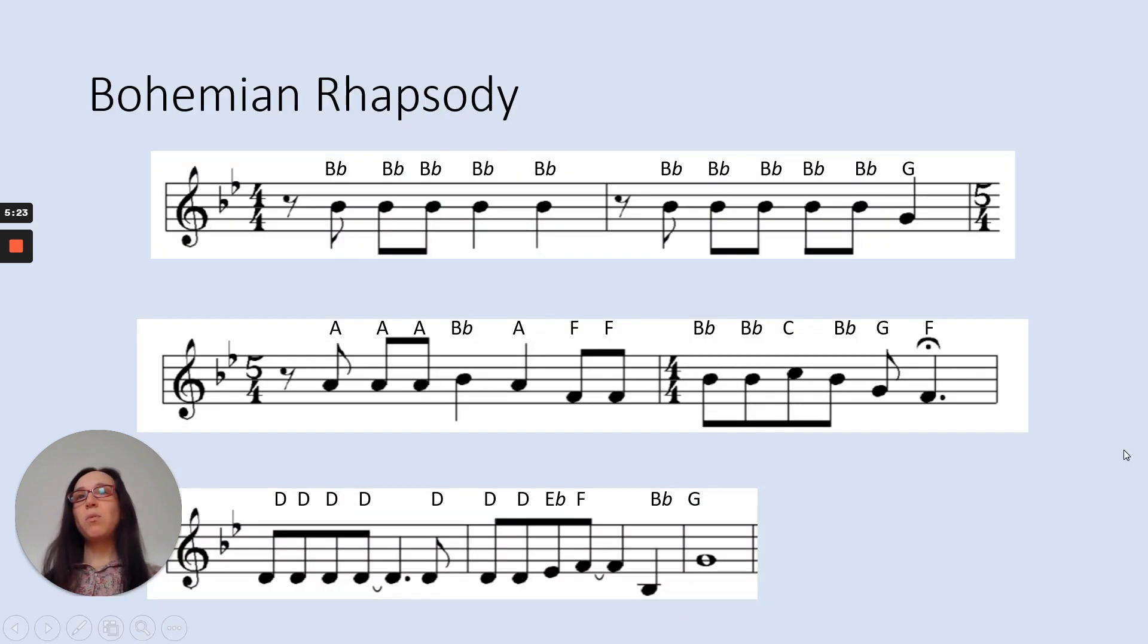Right, so we can play Bohemian Rhapsody because that's got some flats in it. So let's have a look at this. B flat, lots of B flats, and then a G, A, A, A, B flat, A, F, F, B flat, B flat, C, B flat, G, F, D, D, D, D, D, D, D, E flat, F, B flat, G.